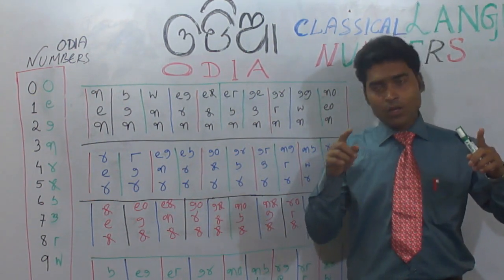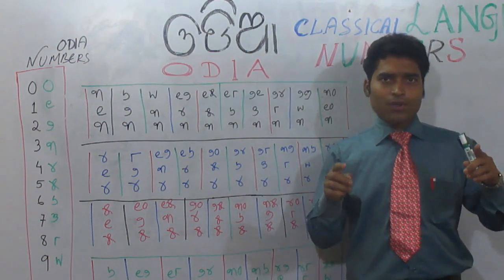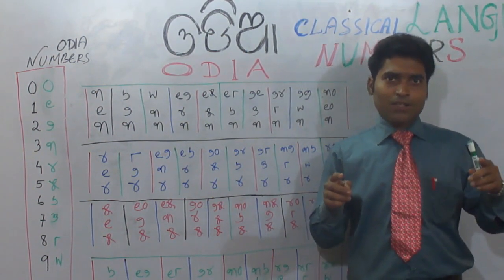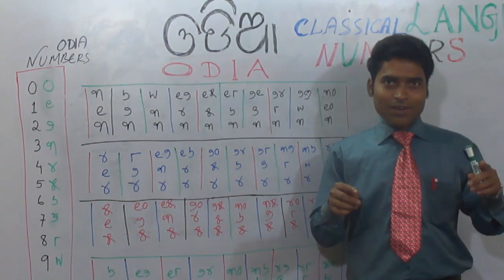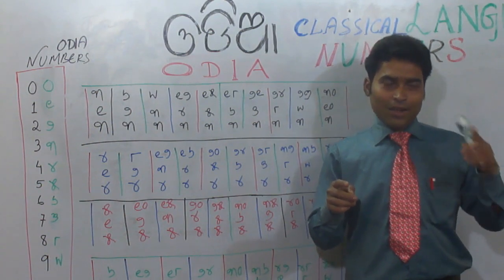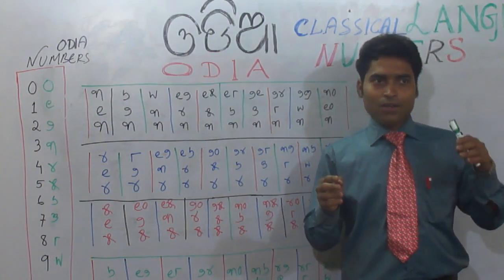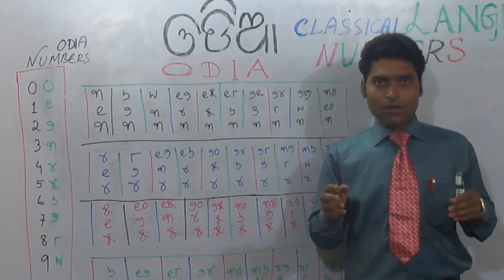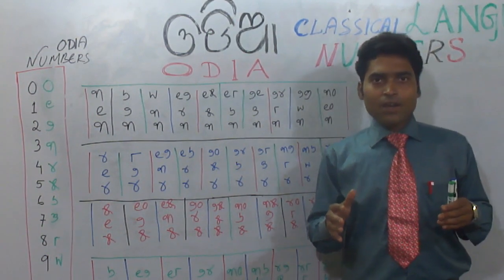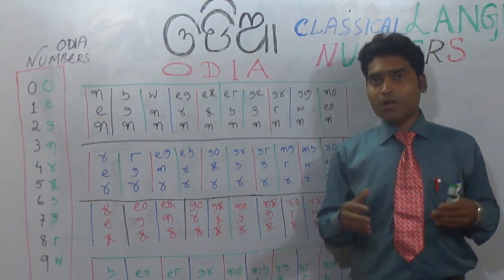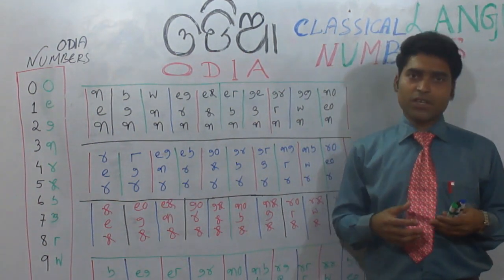The Odia numbers are: one is 'eka', two is 'dui', three is 'tini', four is 'chari', five is 'paanch', six is 'chha', seven is 'sata', eight is 'artha', nine is 'noa', and zero is 'suna'. That means we have nine digits or numbers, and with that we have to learn the multiplication table.